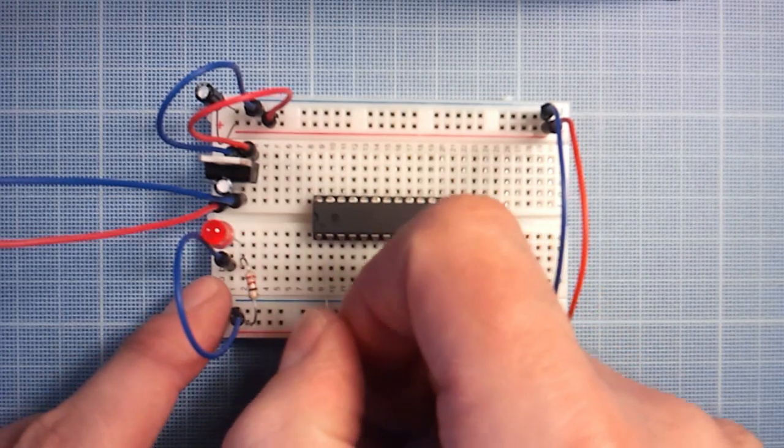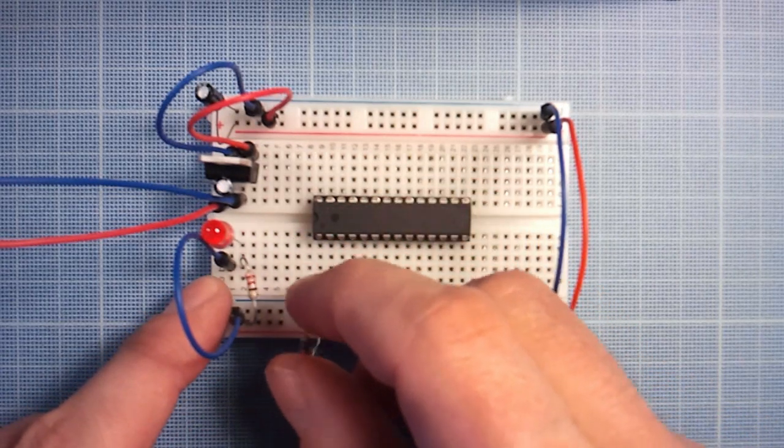Connect a 10k ohm resistor between the first pin of your chip and the positive power.